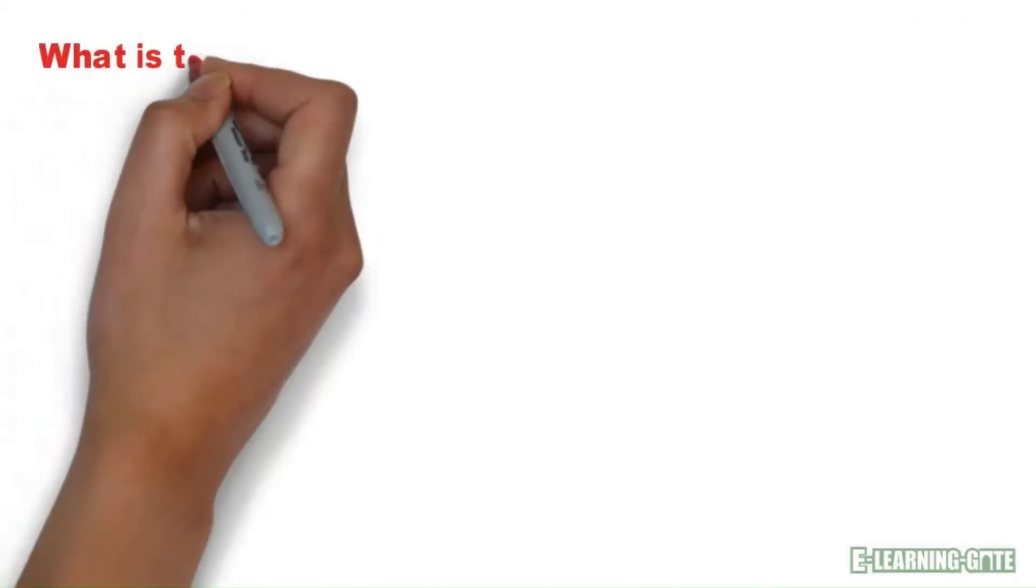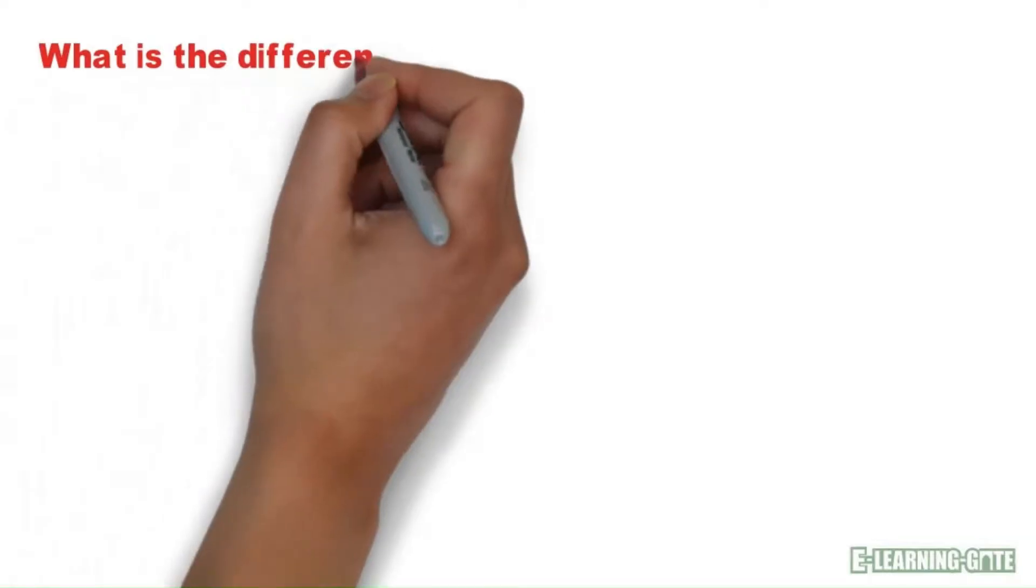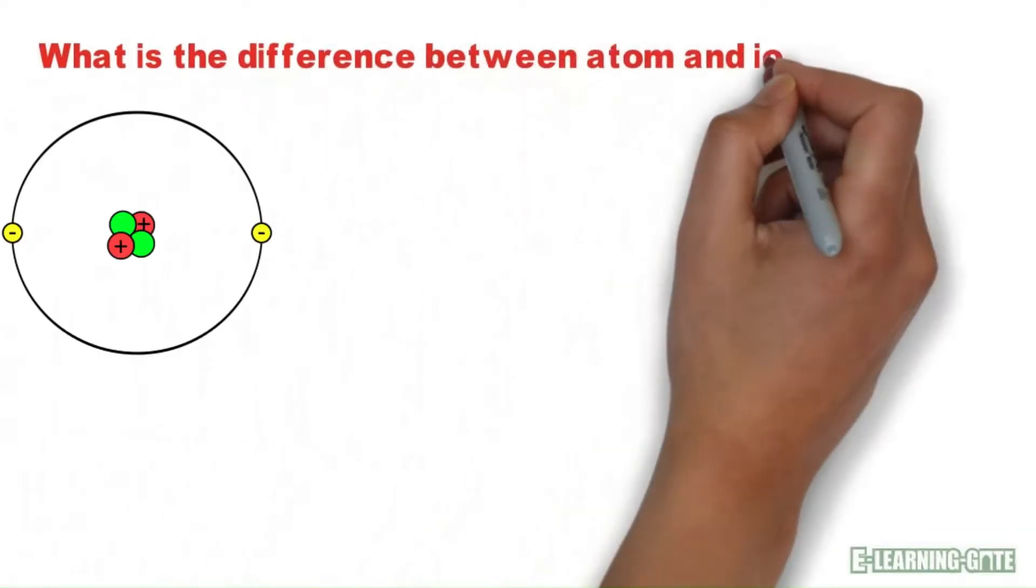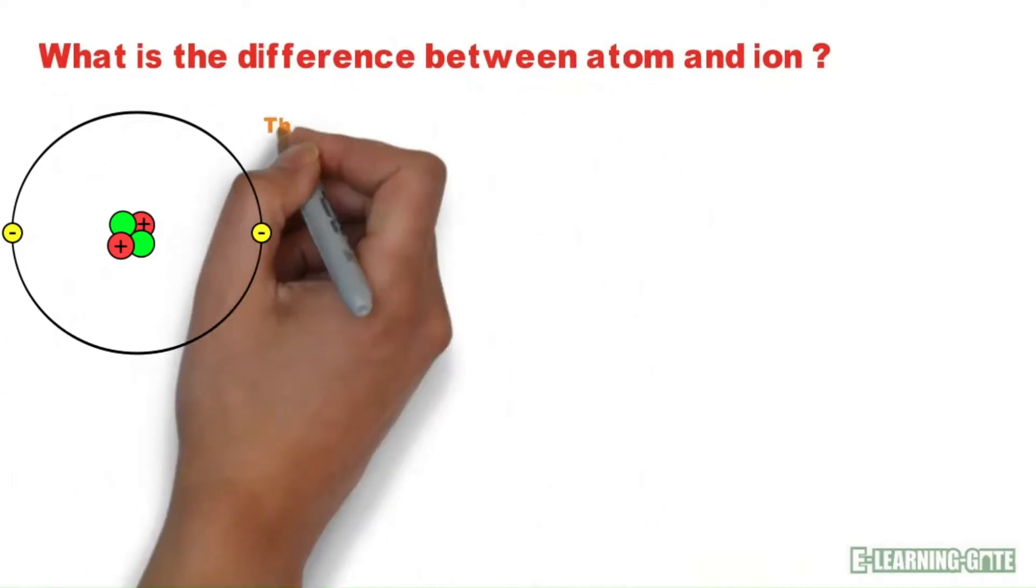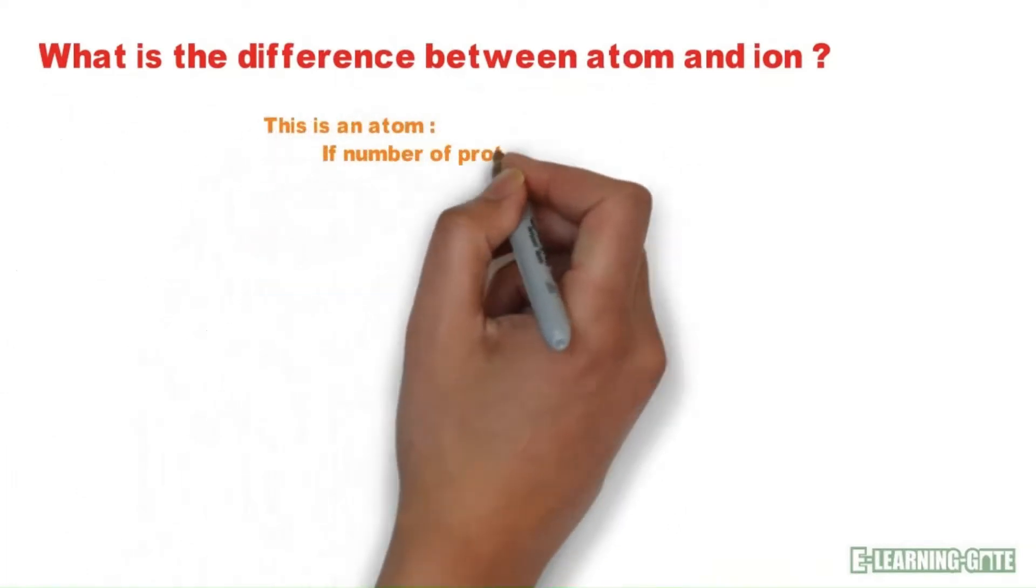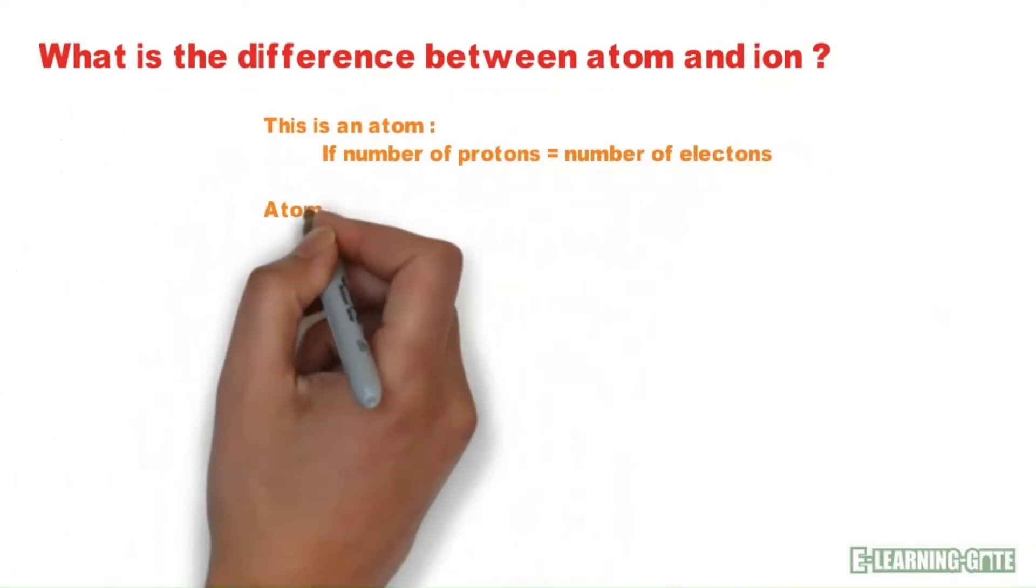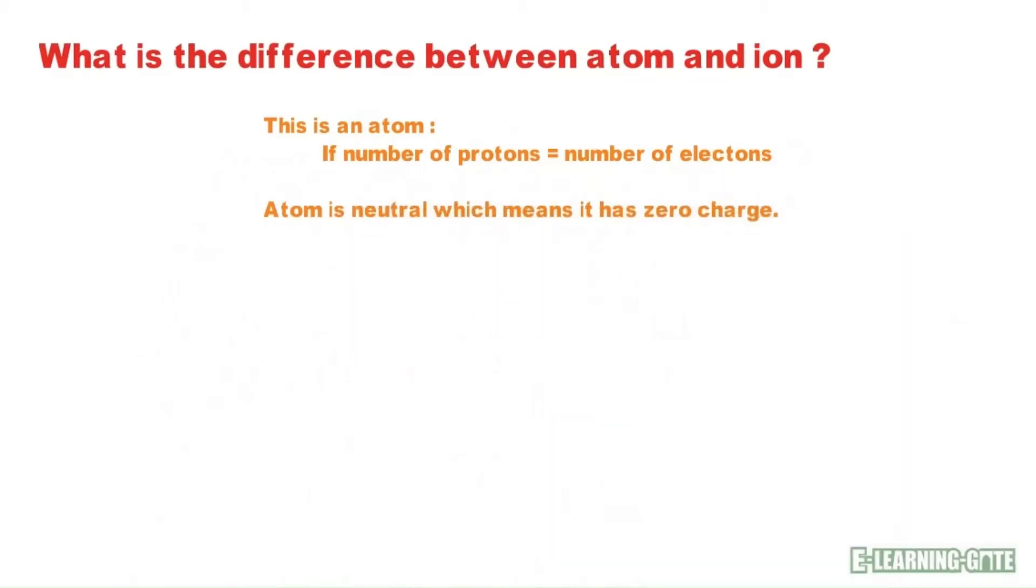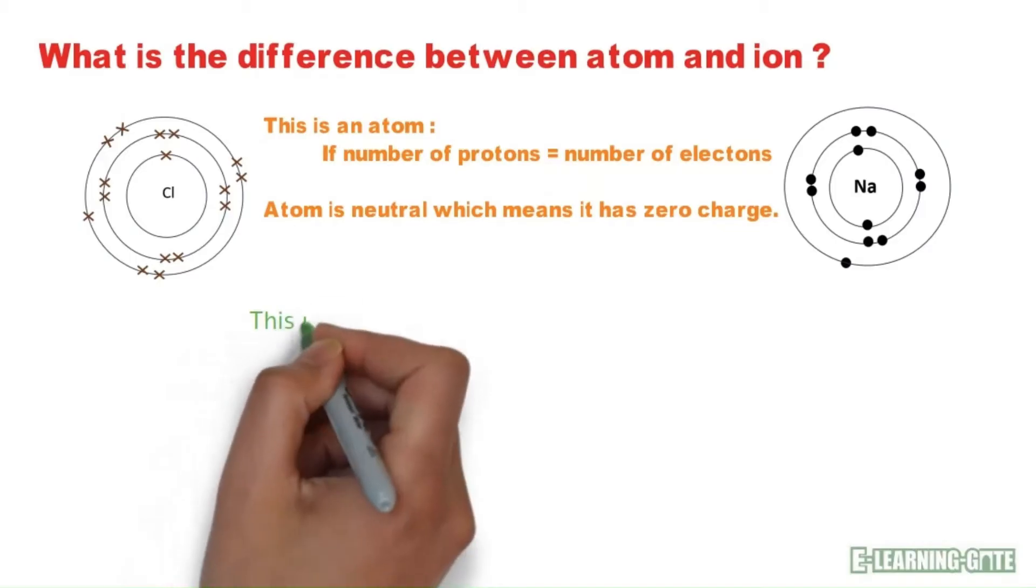It all begins with the atom, the tiniest particle of matter. Atoms consist of protons, neutrons, and electrons. Atoms are neutral because they have equal numbers of protons and electrons. Their charges cancel out each other.